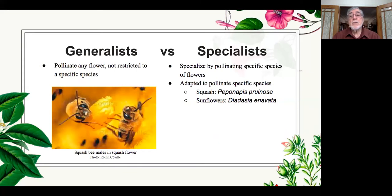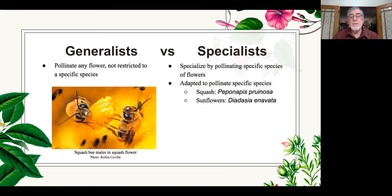We have generalist and specialist bees. Some bees specialize on certain flower types, and some are generalists — they just take anything that comes their way. What they're really after is pollen and nectar, and some are very fussy about how they select. Once you begin to watch bees, you begin to realize that certain bees are doing the same kinds of things every day on certain flowers — that's how you identify a specialist versus a generalist bee.